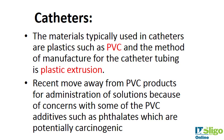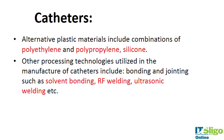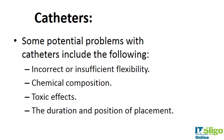The materials used for venous access devices, dialysis tubing, and enteral tubing are much the same — usually PVC, polyethylene, or polypropylene. How they're made is typically by plastic extrusion. There is currently a move away from PVC products due to concerns about additives such as phthalates. Alternative materials include combinations of polyethylene, polypropylene, and silicone. Other processing technologies besides extrusion include solvent bonding, radio frequency welding, and ultrasonic welding, which will be covered later in the course.